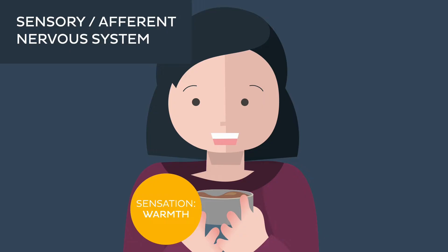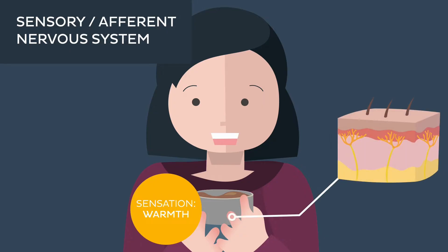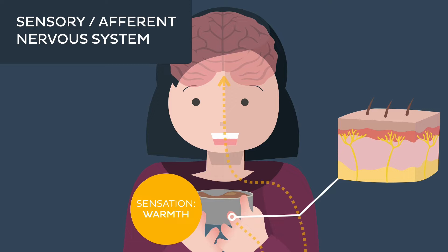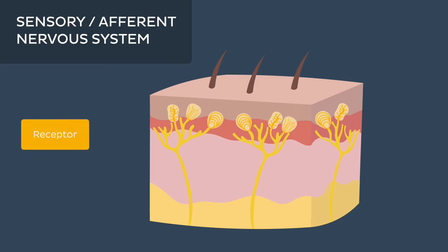Sensation involves the excitation of sensory receptors by stimuli from the internal and external environment, followed by the transmission of this information to the central nervous system for processing. A receptor cell is a molecule, often a protein, that receives and transduces stimuli. These stimuli are then converted into electrical signals.